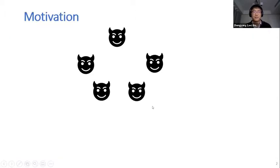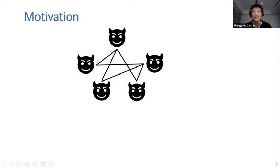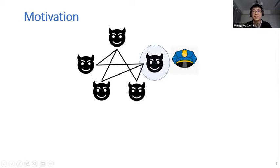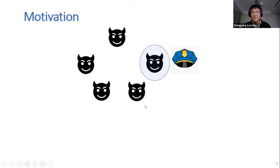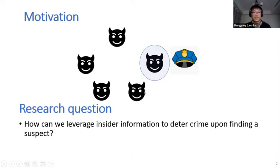Let me start with a bit of motivation. Criminals usually have insider information regarding other people's behavior, and this insider information can usually be captured by social networks like this one. The linked players can observe each other's behavior, and sometimes a policeman will do some random checks — for example, checking the boot of someone's car and finding out this person is a drug dealer. However, this policeman usually does not know the drug dealer network in the area. So this motivates our research question: how can we leverage insider information to deter crime upon finding one suspect?